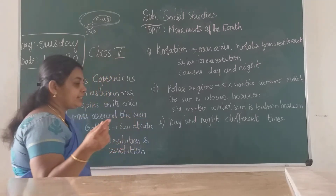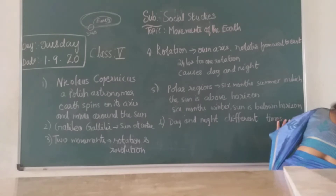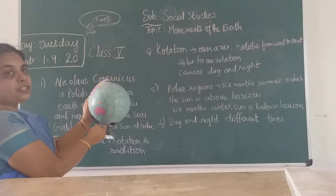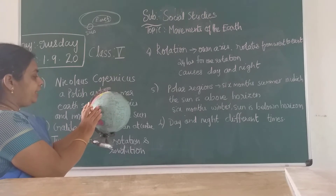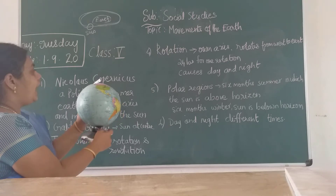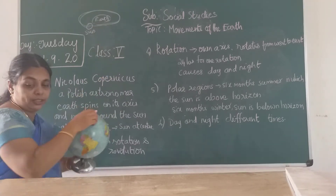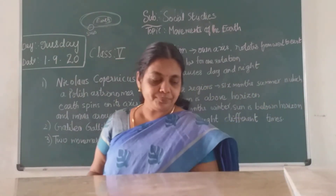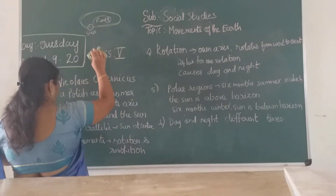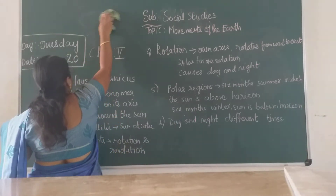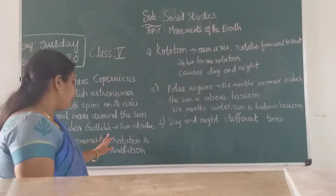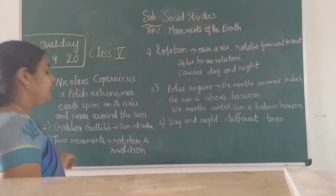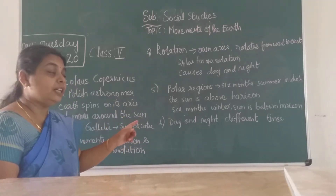The earth spins on its axis. The center point from the North Pole to the South Pole is called the axis. Galileo Galilei also confirmed that the sun is at the center and all other planets move around the sun.